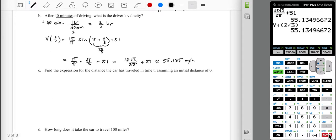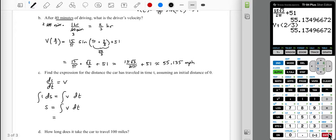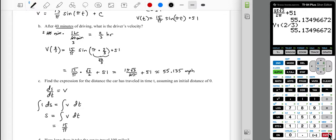Now, it says find the expression for the distance the car has traveled. Alright, so it's position. So ds dt is the same as velocity. ds is v dt, the antiderivative of which would be s is equal to the antiderivative of v dt. Since we know v is 15 over pi times the sine of pi t plus 51 dt, then we can anti-differentiate this and then worry about the initial value in a sec.